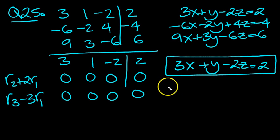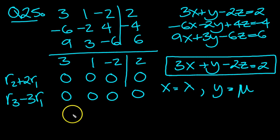So if you wanted to parameterize it, we're going to need two parameters, aren't we? So let x equal lambda and y equal mu. And then we can find out z.